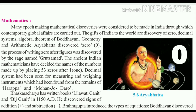The process of writing zero after a figure was discovered by the sage named Grushmat. The ancient Indian mathematicians have decided the names of the numbers made up by placing 53 zeros after one.